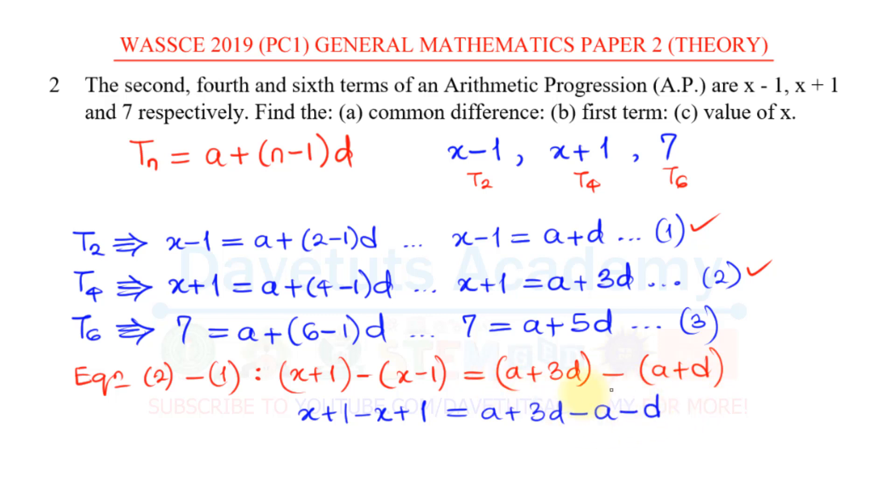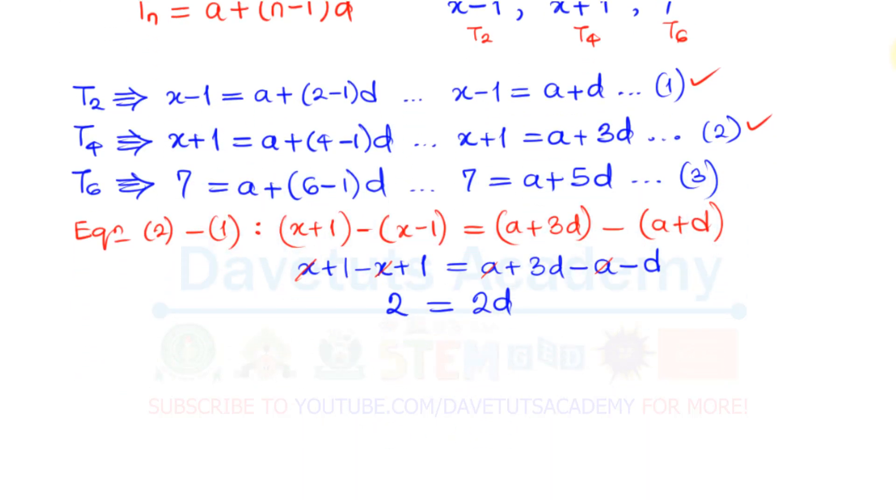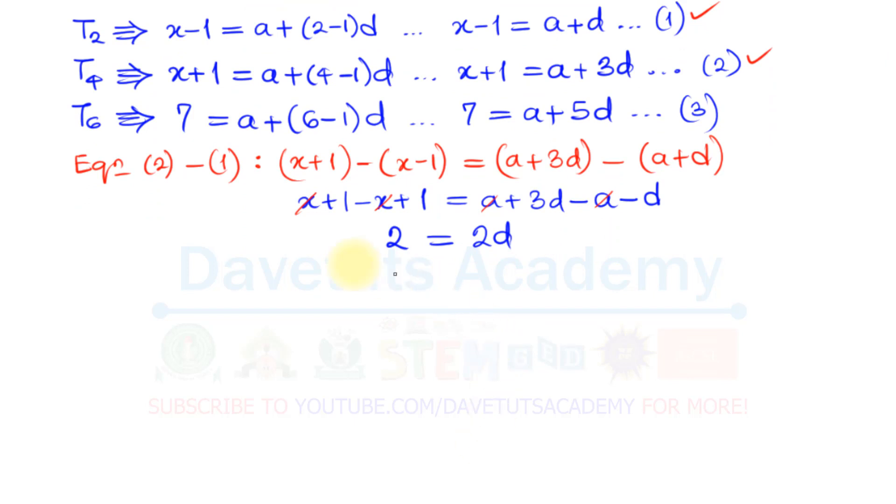Having this now, I can see that x minus x here, that will give me 0, then 1 plus 1, that will be 2, so I have 2 = a minus a, that will also be 0, so that will knock out, and I'm left with 3d minus d. 3d minus d will be 2d. I can divide both sides by 2, this 2 will cancel this 2, and 1 will be the result, meaning that d = 1.